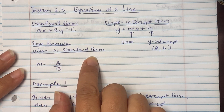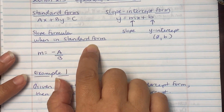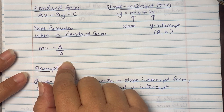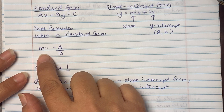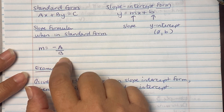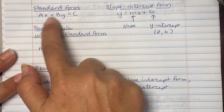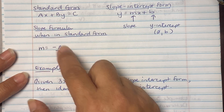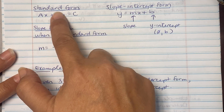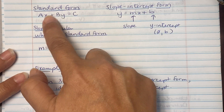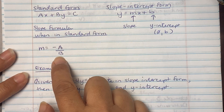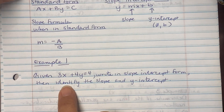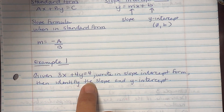When given an equation in standard form, the easiest way to find slope is to use negative A over B. Take the A value — the coefficient — make it negative, divide by the B value, and be careful with signs. If there's a minus, you need to include it.